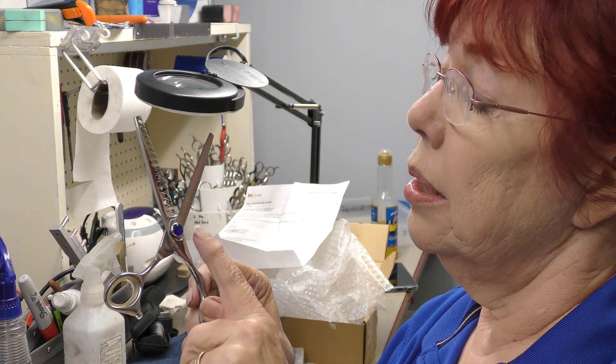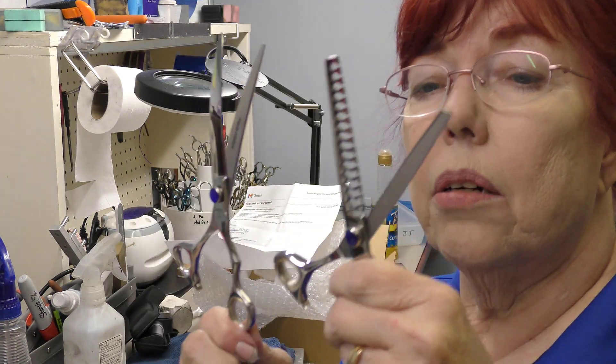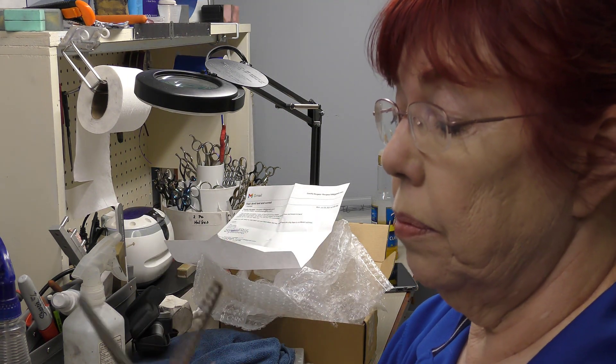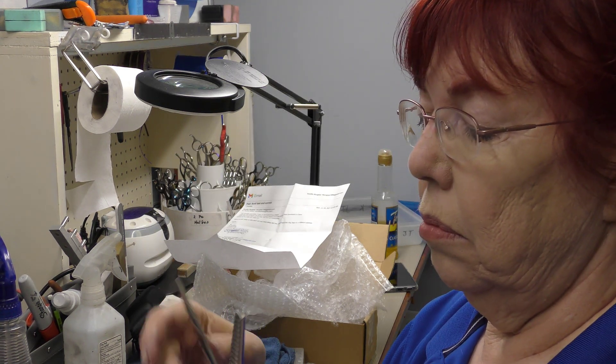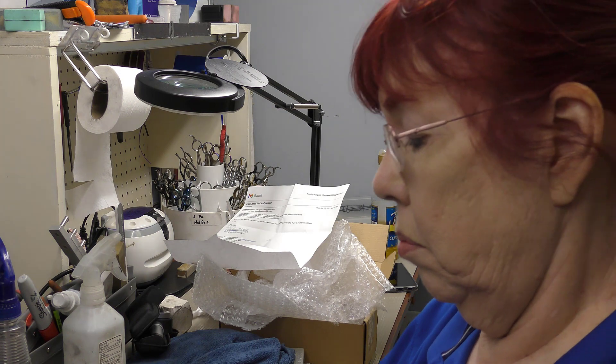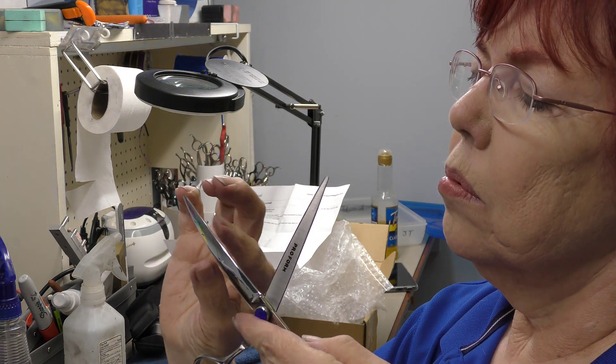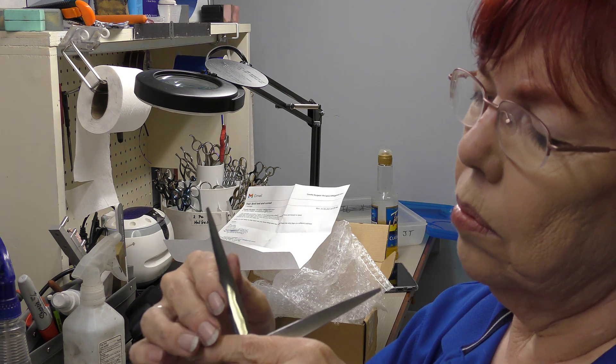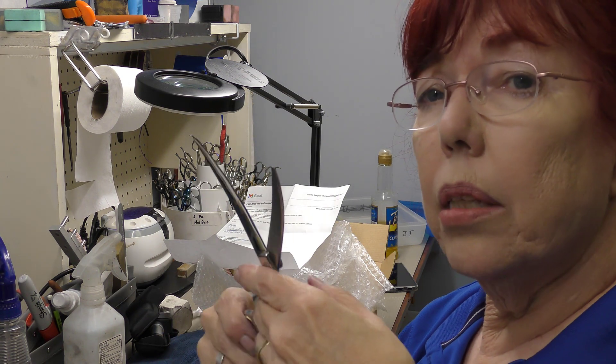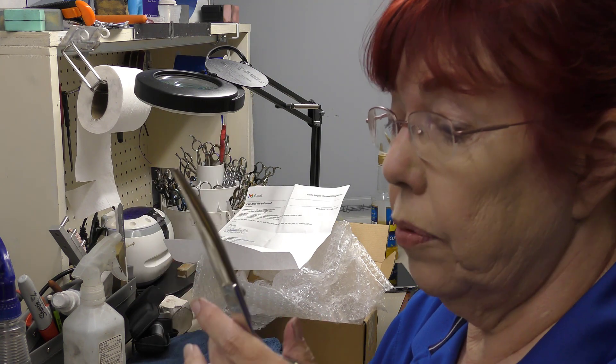Shears that fold, first thing I look at is the pivot screw. Both of these are plenty tight, so that shouldn't be the pivot screw. The other thing that would cause a shear to fold is if the edge is just really rounded over. Edge feels pretty sharp. Little blunt, little blunt.